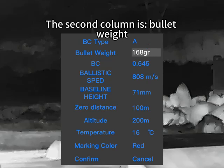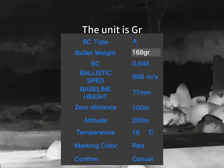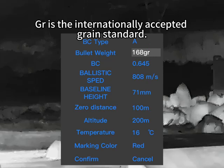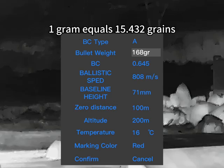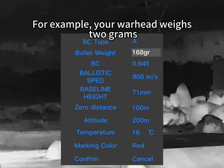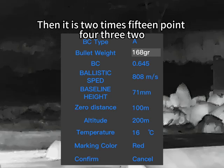The second column is bullet weight. The unit is 'gr', which is the internationally accepted grain standard. One gram equals 15.432 grains. For example, if your bullet weight is in grams, multiply by 15.432, then round off after the decimal point and fill it in.